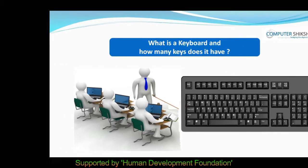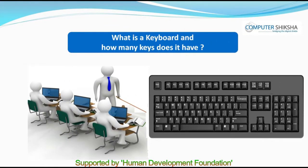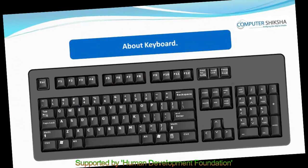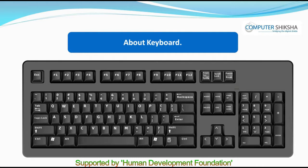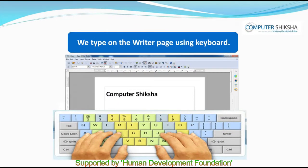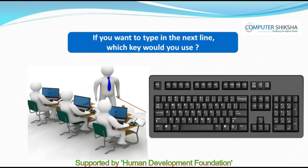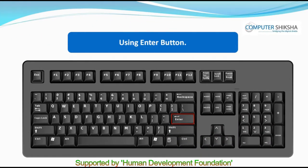What is a keyboard and how many keys does it have? The keyboard is a very important part of our computer. Using it, we can type anything we like. Even if the mouse of your computer gets spoiled, you can still work on the computer using the keyboard. The keyboard has 101 to 105 keys. If you want to type in the next line, which key would you use? To go to the next or new line, we make use of the Enter key.